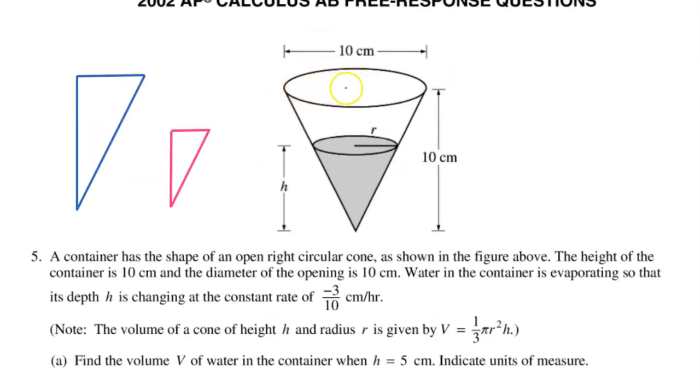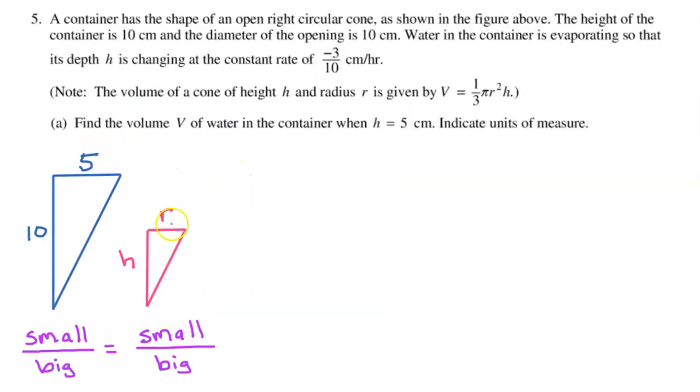Since the diameter of the opening of the container is 10, I know that the radius at the top would be 5. So this is 5, and we know the height of the container is 10. So this is 10. Meanwhile, on the smaller triangle where the water level is, we will just call this R and H.